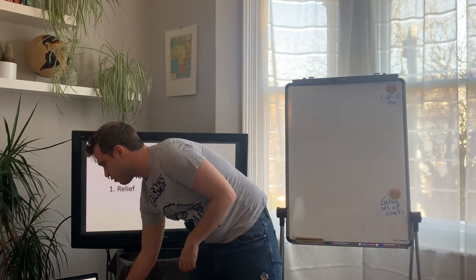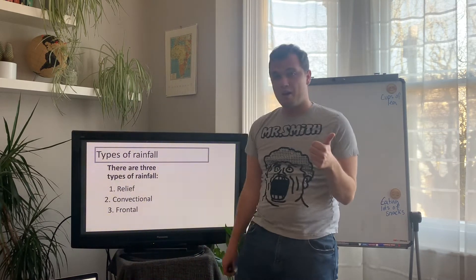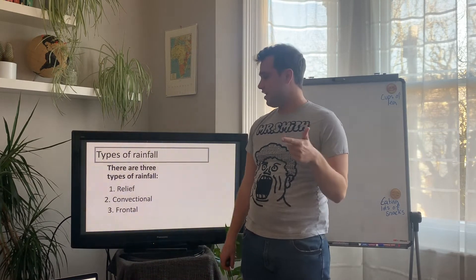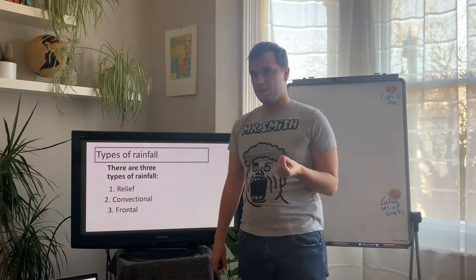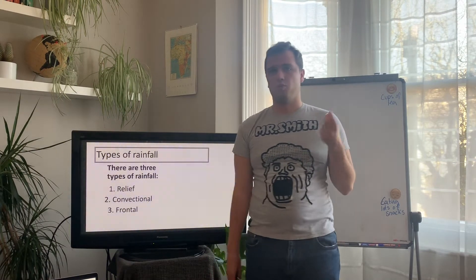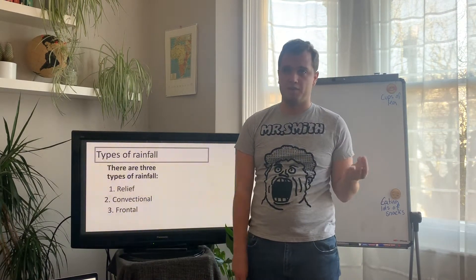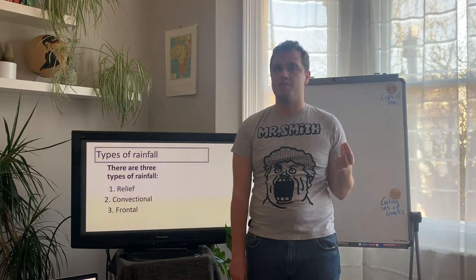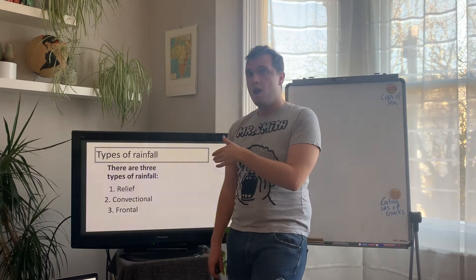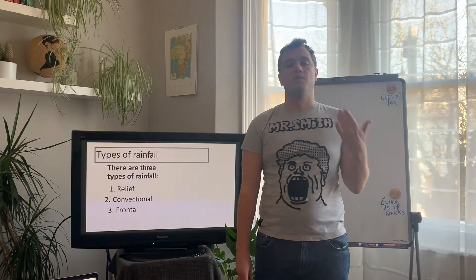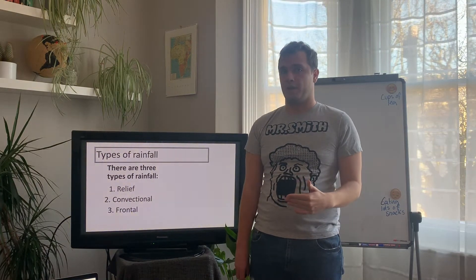These three types are called relief rainfall, convectional rainfall, and frontal rainfall. For this next part of the lesson you're going to want your types of rainfall sheet in front of you, or copies of the diagrams, because I'm going to go through each type and you are going to make some notes on these different types of rainfall.